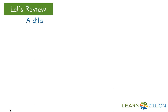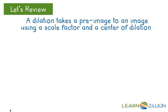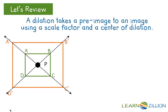Let's review. A dilation takes a pre-image to an image using a scale factor and a center of dilation. In this diagram, A, B, C, D is the pre-image. The center of dilation is point P, and the image under dilation is A', B', C', D', and it has a scale factor of 2.